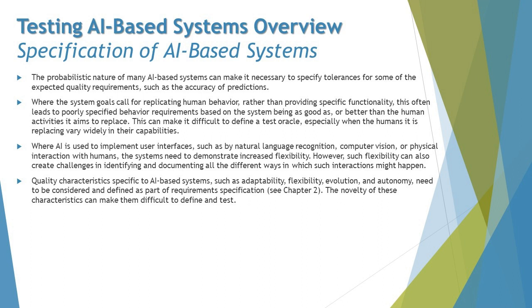Another important point: quality characteristics specific to AI-based systems — such as adaptability, flexibility, evolution, and autonomy — need to be considered and defined as part of the requirements as well. The novelty of these characteristics makes them difficult to define and test, because they are very unpredictable. Putting it all together, whether functional or non-functional, things are pretty unpredictable, and as testers we face challenges getting the information we need to decide whether the system is working as expected.